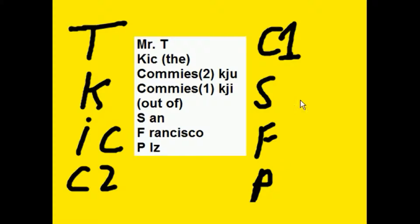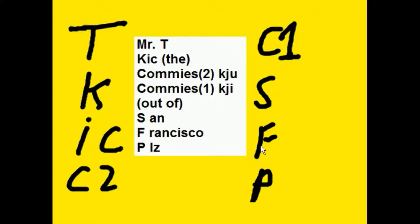The wilder the mnemonic, the easier it is to remember. Just put a picture of that into your head: Mr. T standing on the edge of a map of California, San Francisco, and he kicks commie 2 and commie 1 — Kim Jong-un and Kim Jong-il — the two of them off the map and into the Pacific Ocean. This is just a funny way to help you remember these items.